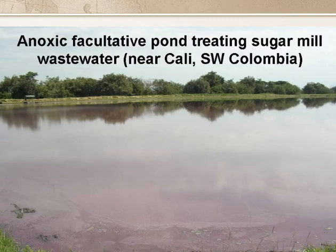Facultative ponds like this one in South Colombia turn purple when they are overloaded. So much sulphide is produced that the algae are inhibited by the high level of dissolved H2S gas, and concomitantly there is a huge growth of photosynthetic bacteria, as they quickly respond to the greatly increased concentrations of sulphide, so the pond turns purple.